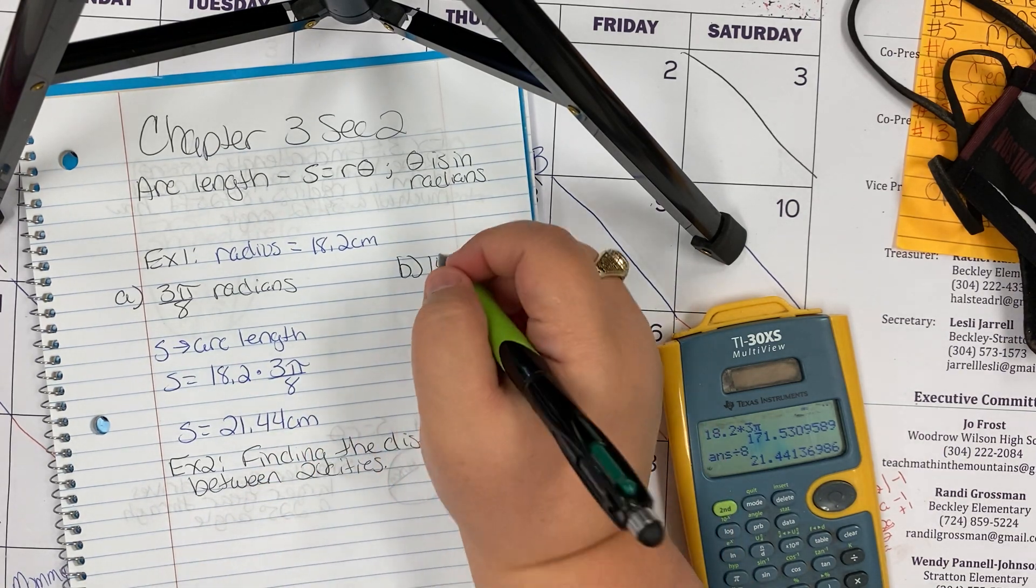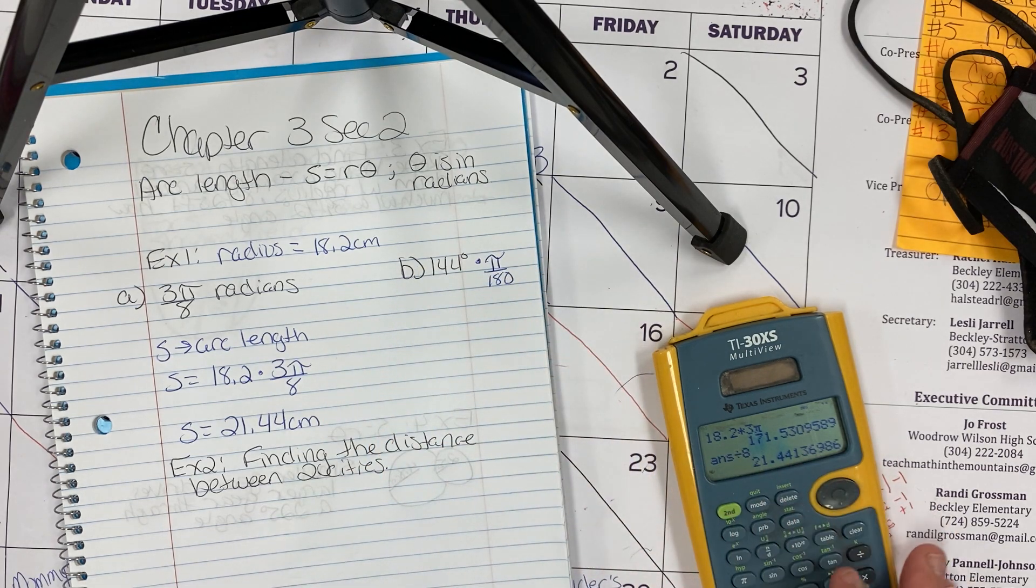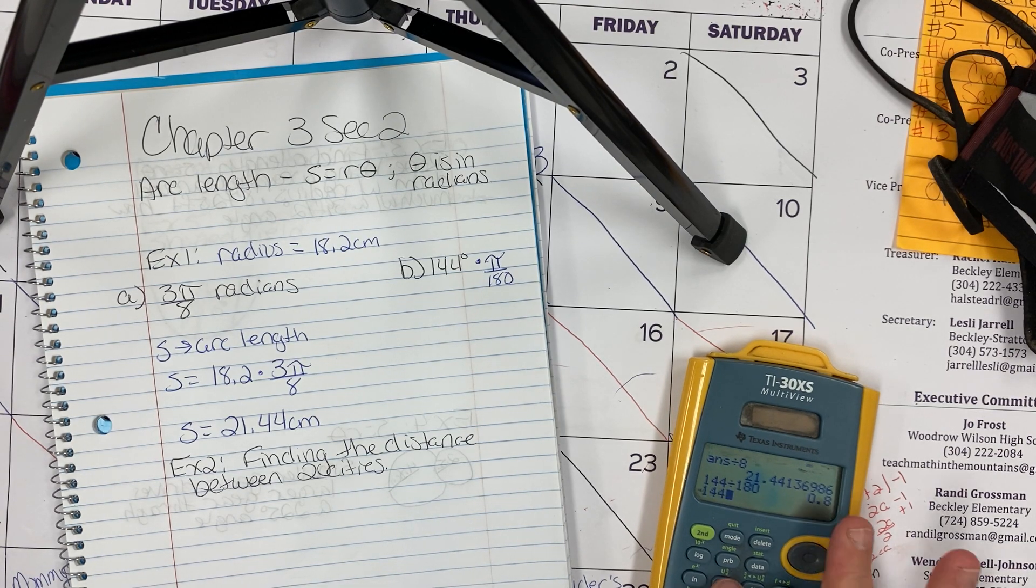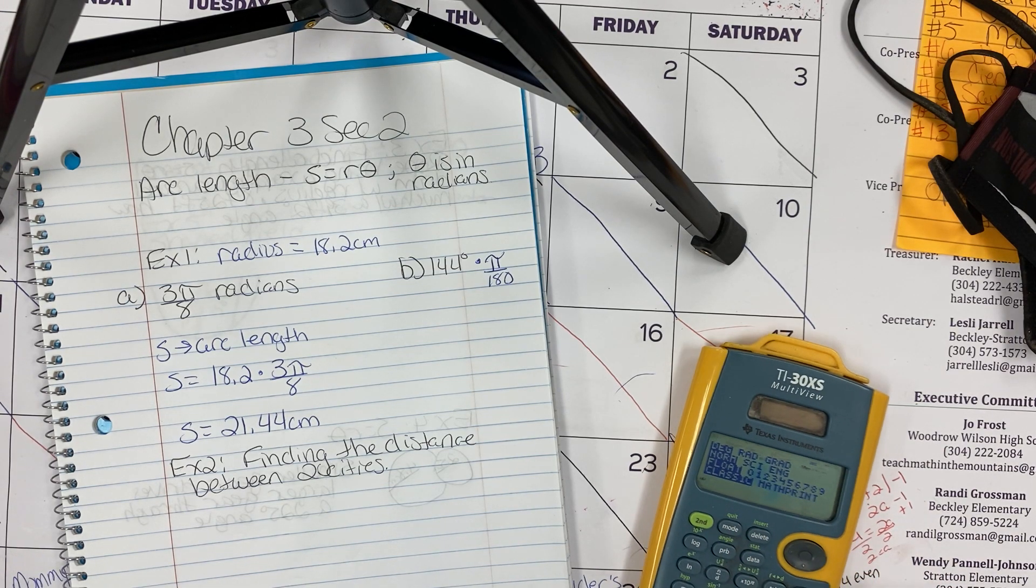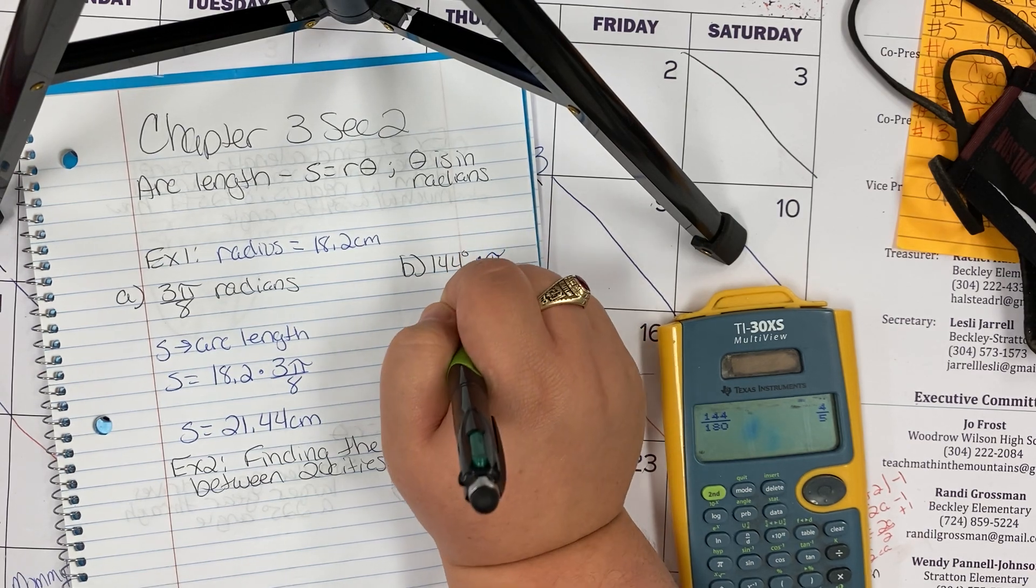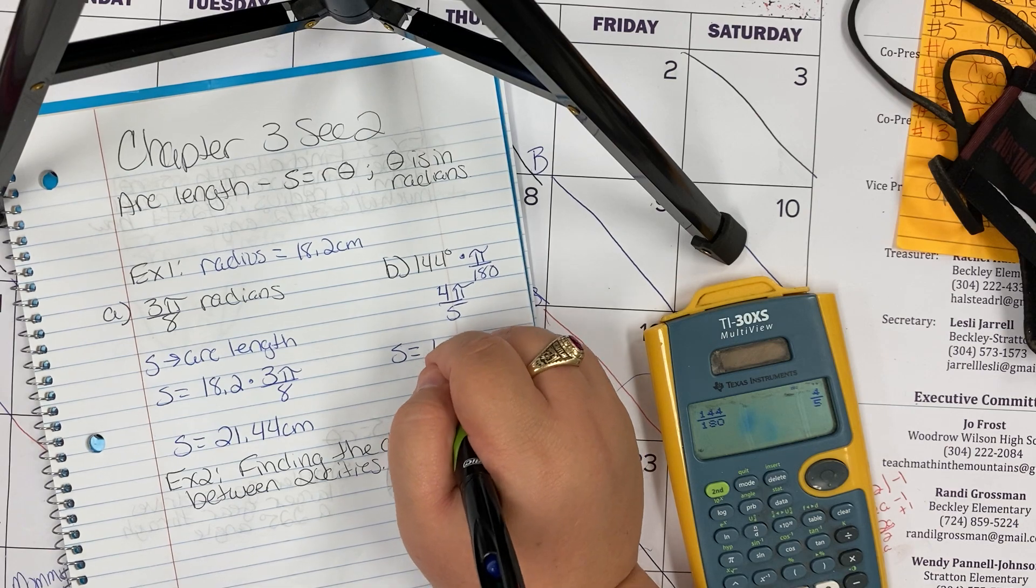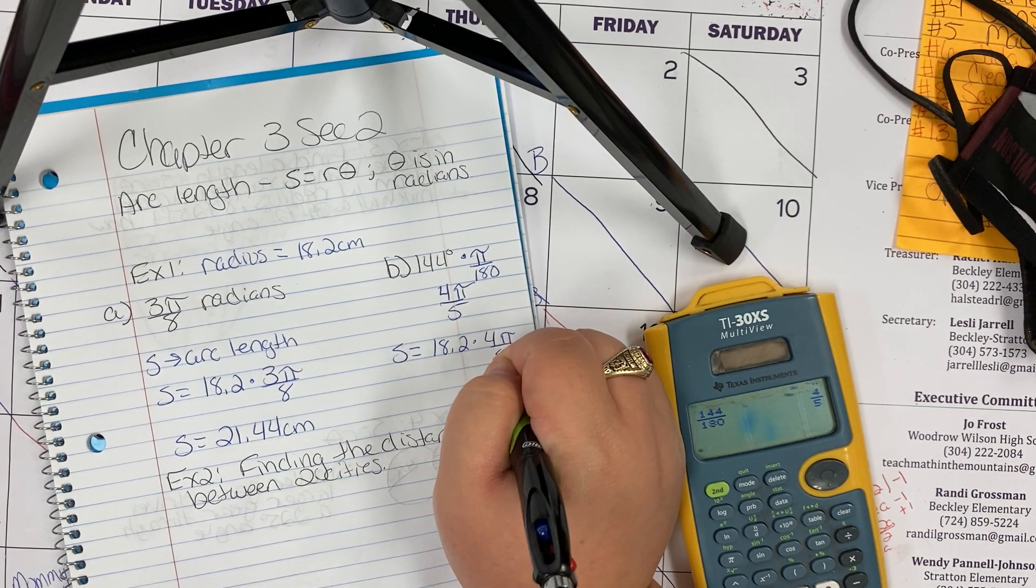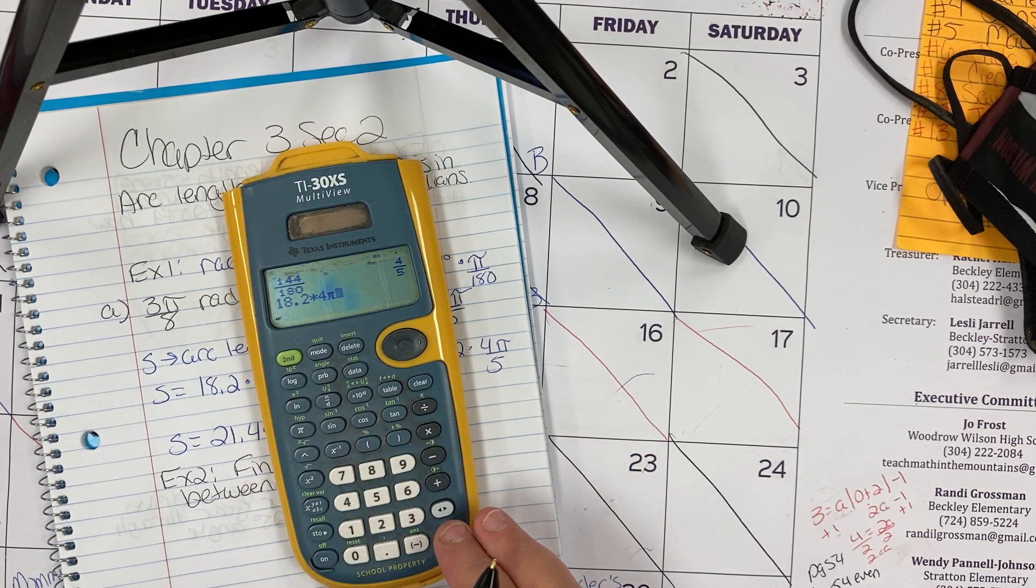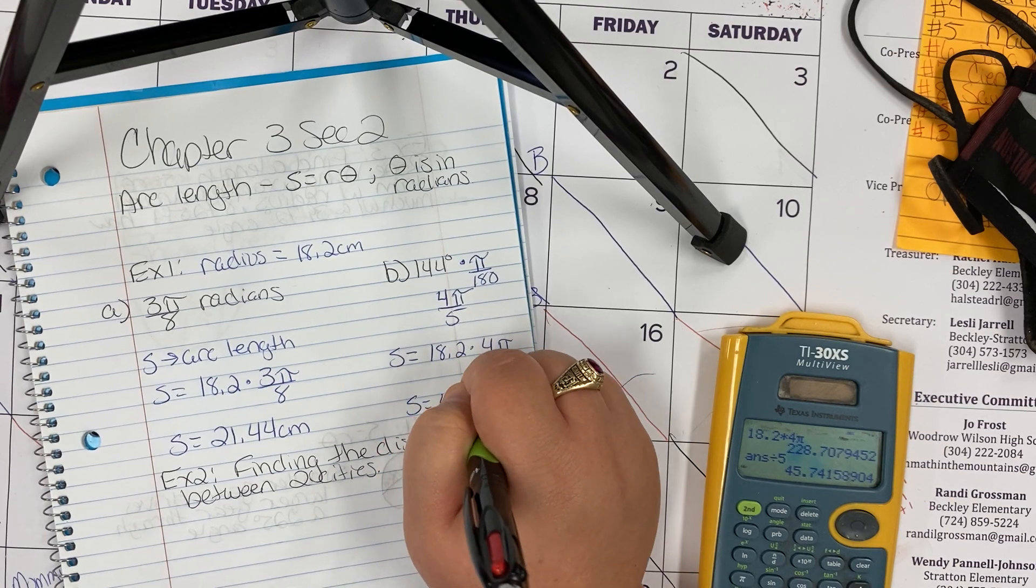144 degrees is not in radians, so just like last section we have to multiply by π over 180, which ends up being 4π over 5. Then I'm going to find the arc length: s is going to equal 18.2 times 4π over 5. So again in the calculator, 18.2 times 4π, divide that by 5, you get 45.74 centimeters.